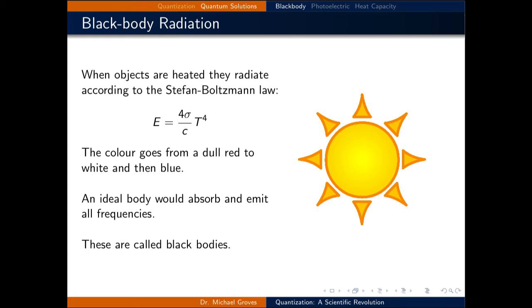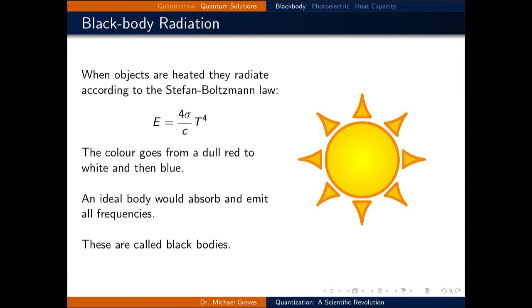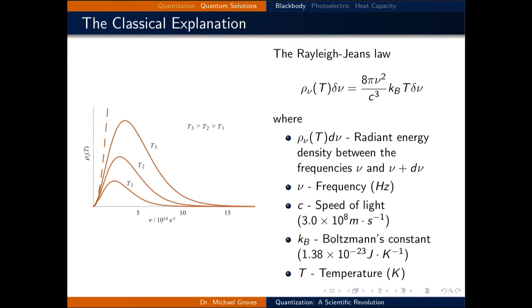Now, the radiation or light emitted is caused by the vibrations of electrons in the material. So, as the temperature increases, the electrons vibrate more vigorously, and the color goes from a dull red to white and then blue. An ideal emitter or absorber absorbs and emits all frequencies, and these are called blackbodies.